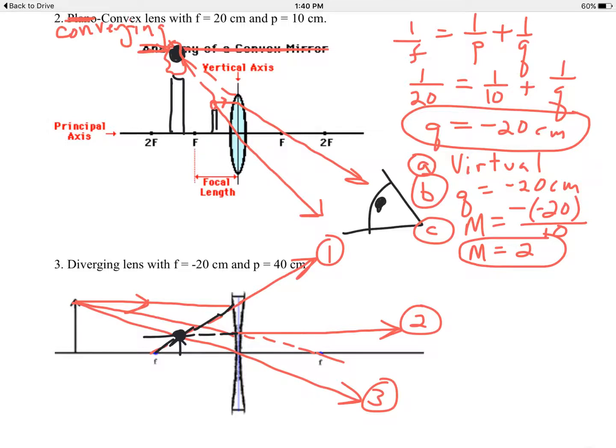So that's locating the image using a ray diagram. Now, let's calculate the location of the image using the lens equation. 1 over F equals 1 over P plus 1 over Q.